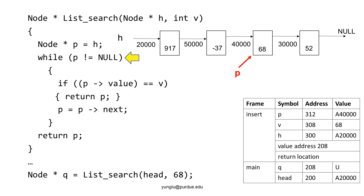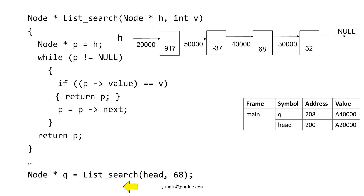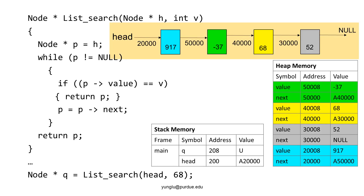P's value is 40,000 — not null. Thus the program continues to the if condition. At this moment, the node's value matches the value of v, so the search function returns p. The value of p is returned and saved to the variable q. This is the stack after the search function returns — the top frame has been popped. Notice that head's value is still 20,000 and still points to the first node of the linked list. Let's go over the program again, this time explicitly showing the heap memory.